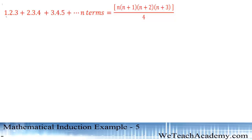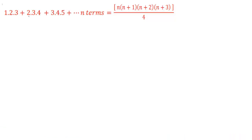So let us prove that 1×2×3 + 2×3×4 + 3×4×5 + ... up to n terms is equal to n(n+1)(n+2)(n+3) divided by 4. We observe that the nth term is missing, so first let us find the nth term of the series.